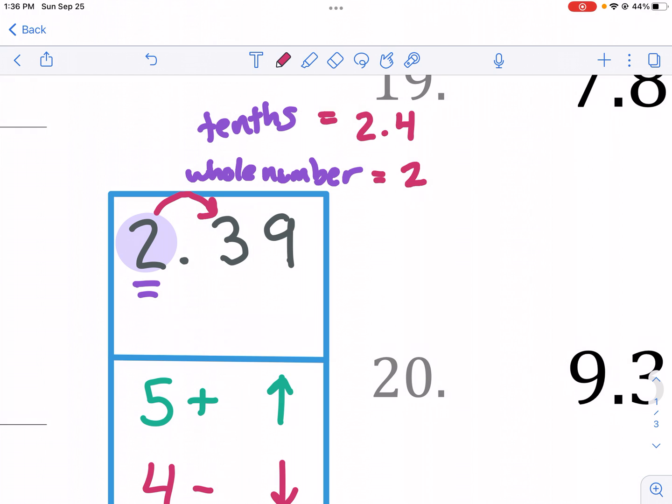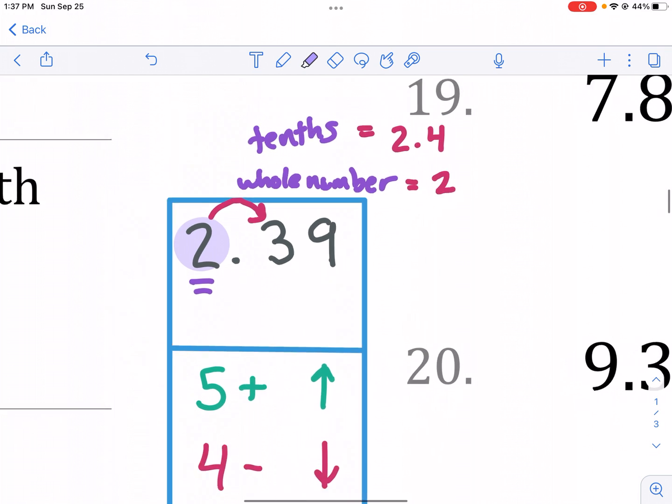I've seen students make mistakes where they change it to 2.4 because, or they leave it as 2.3 because they're just trying to keep this whole number the same. Don't be doing that. If it's asking for a whole number, the last digit you should be writing is the ones place. If it's asking for the tenths, the last digit you should be writing is the tenths place. So that's just a little helpful hint.